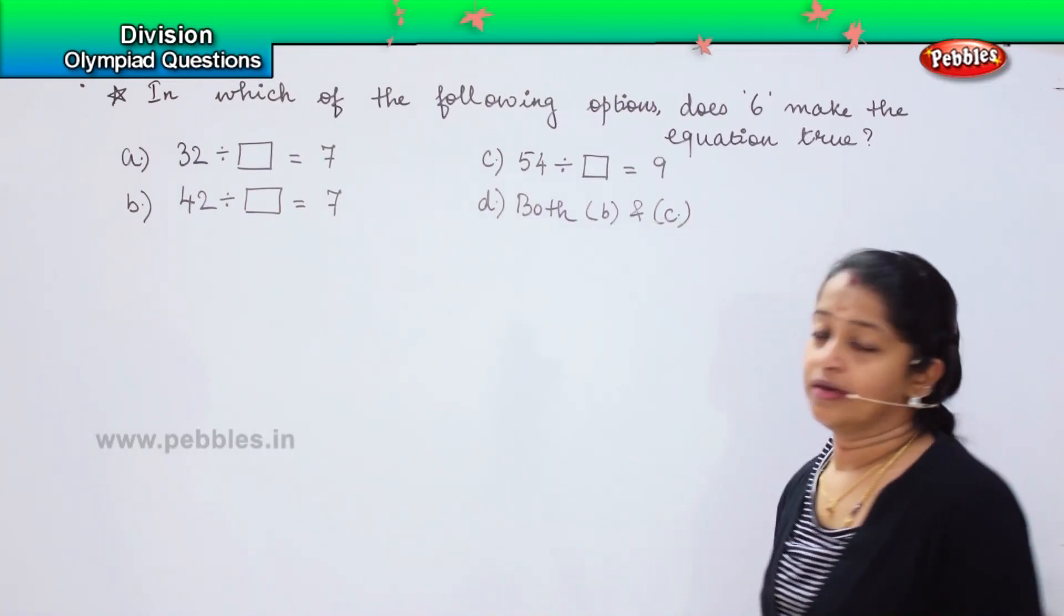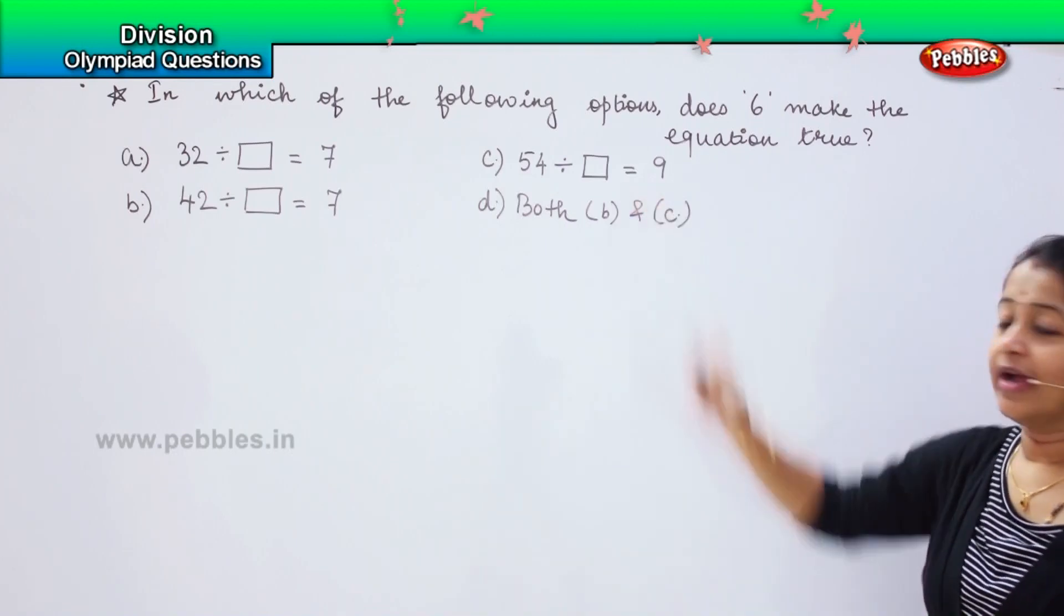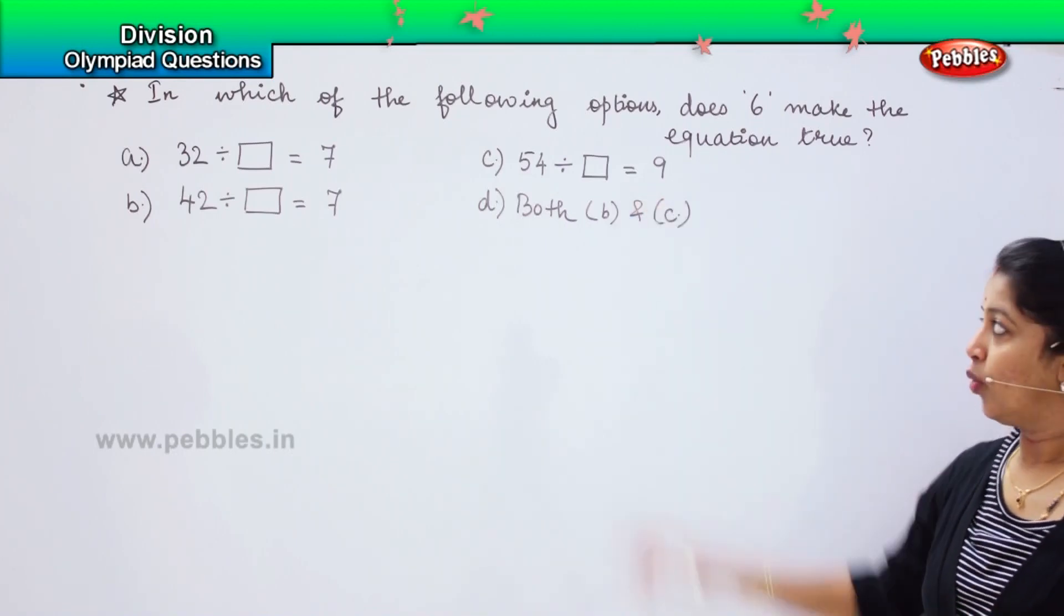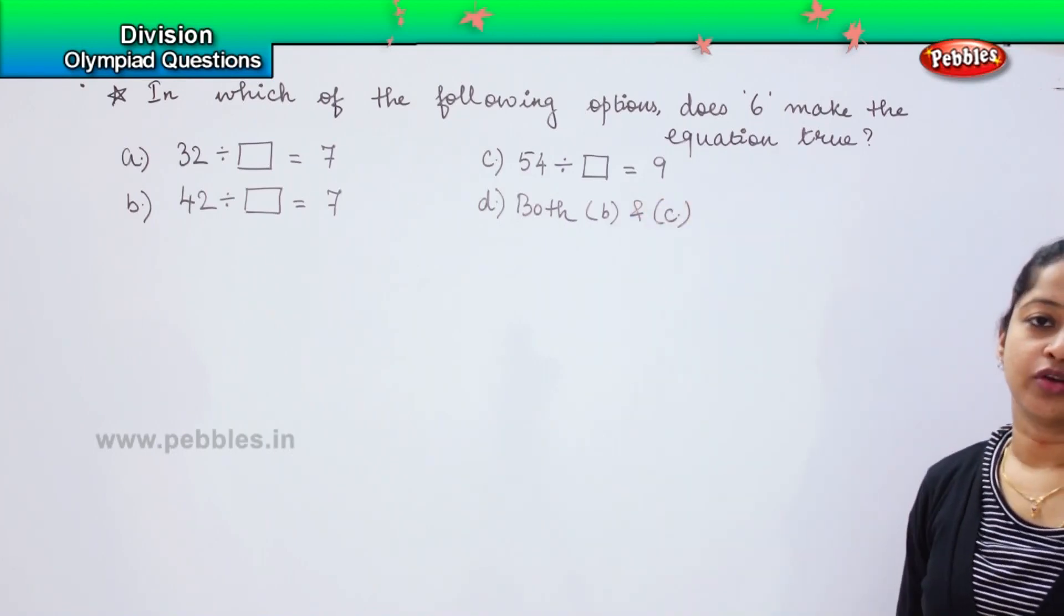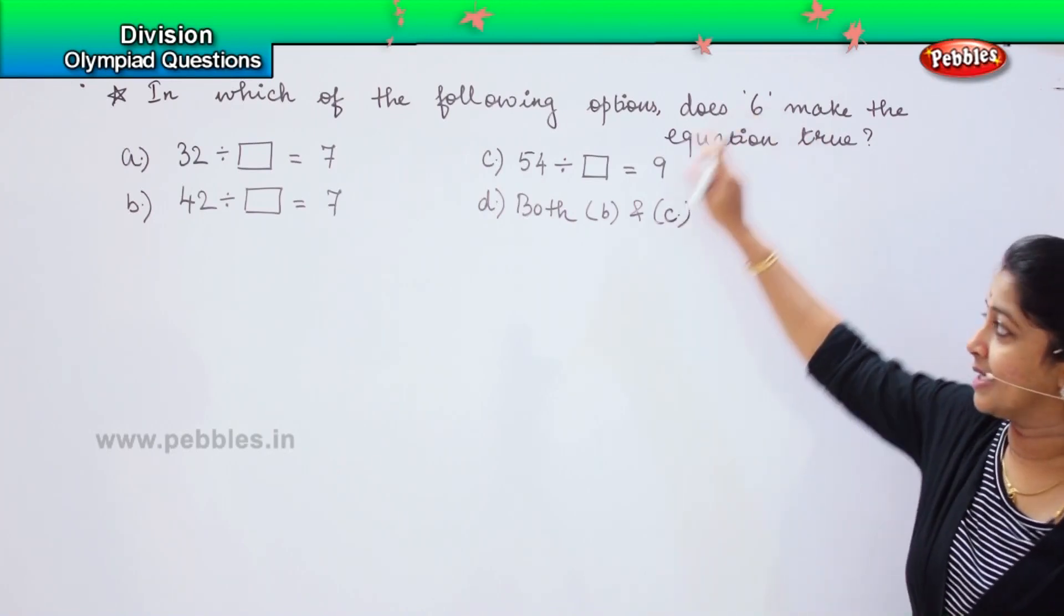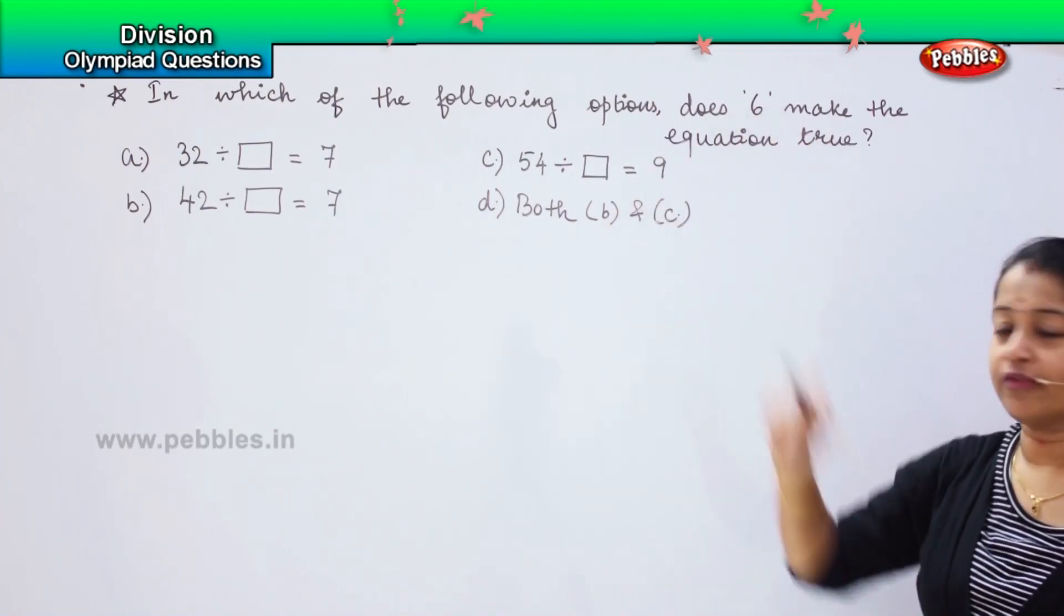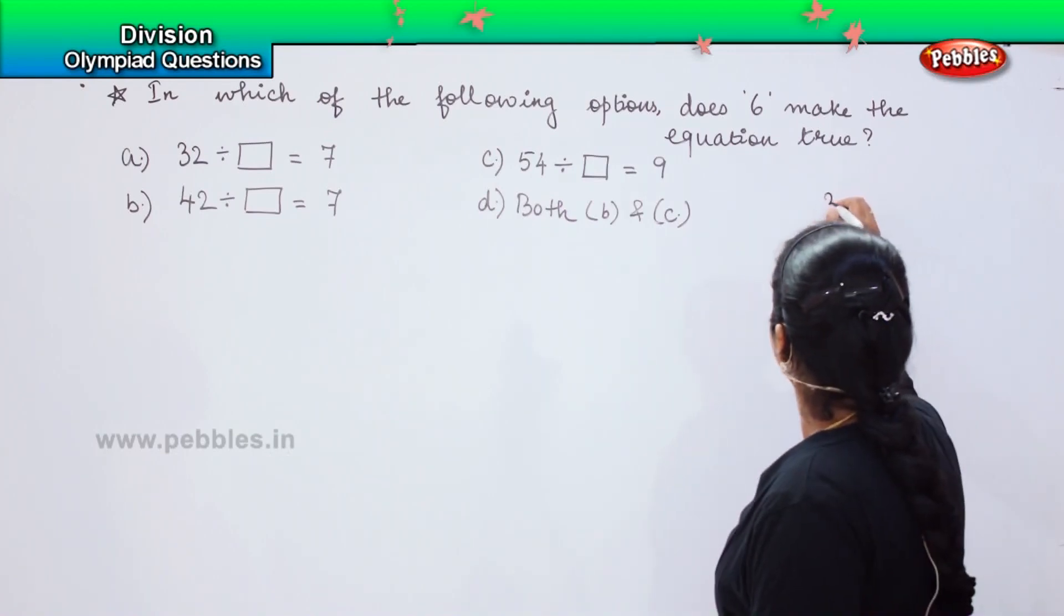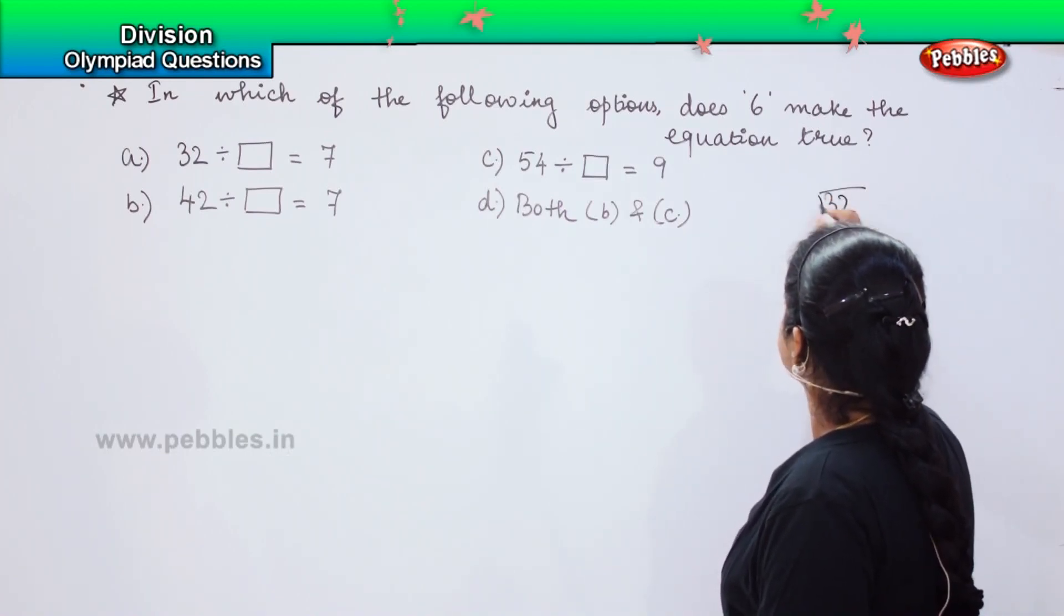What we have to do here, we need to divide all the three and see which among them stands true for the equation. We need to get the answer 6. Let us see. Starting from the first one, 32 divided by 7.